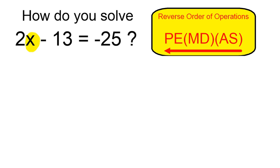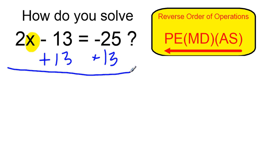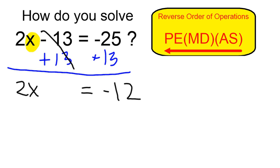So to undo subtraction of 13, we're going to add 13 on both sides. My minus 13 and plus 13 cancel, leaving us with simply 2x, and negative 25 plus 13 is going to equal negative 12.